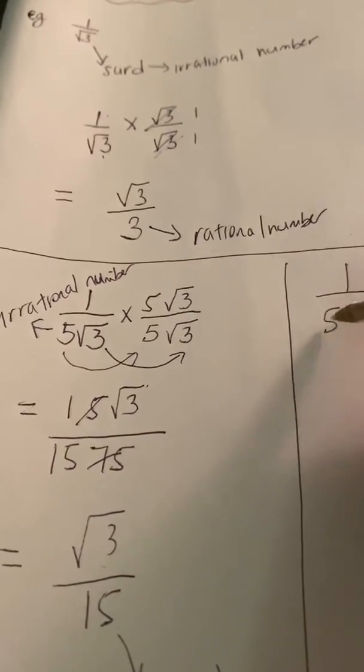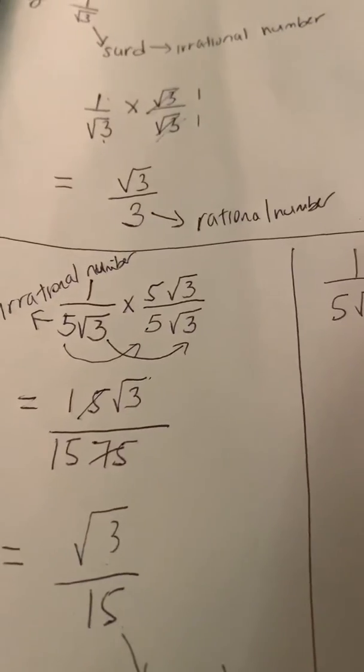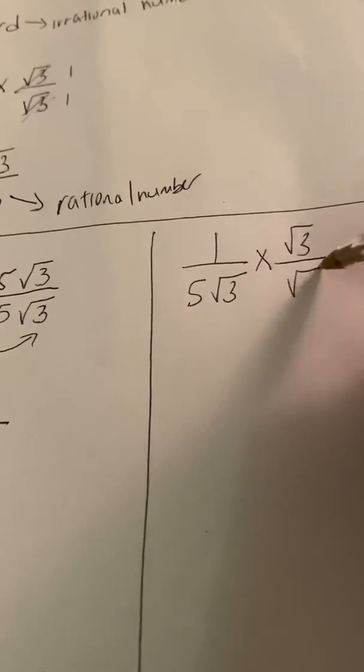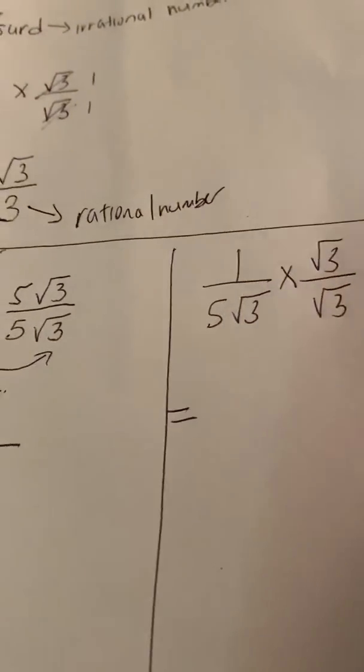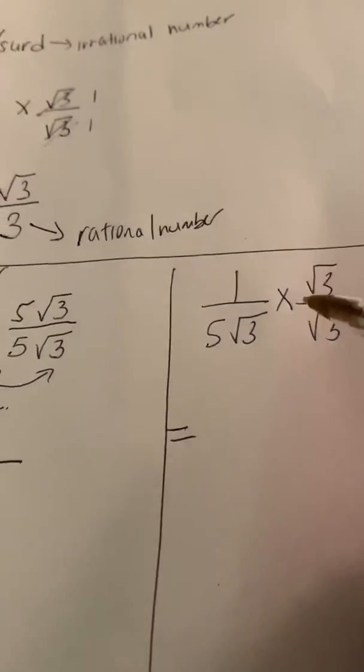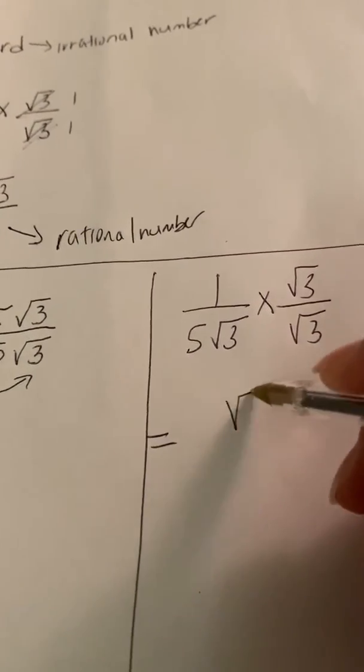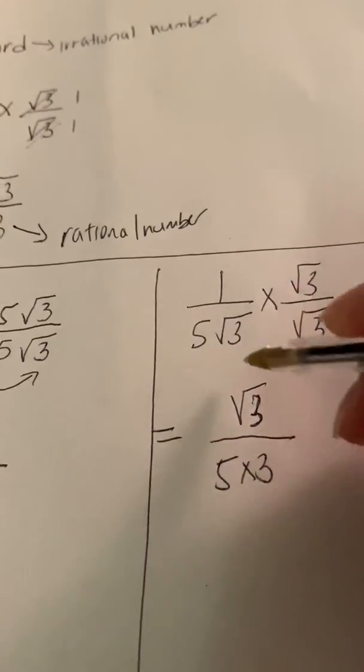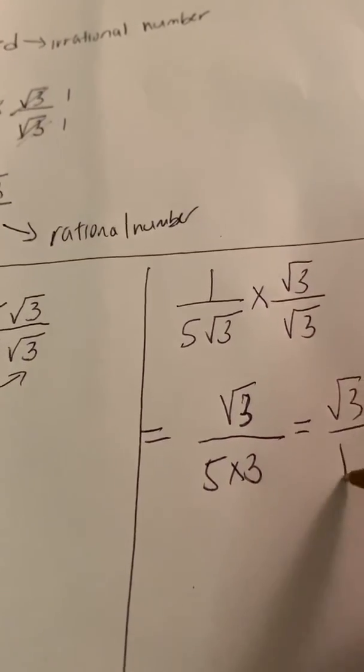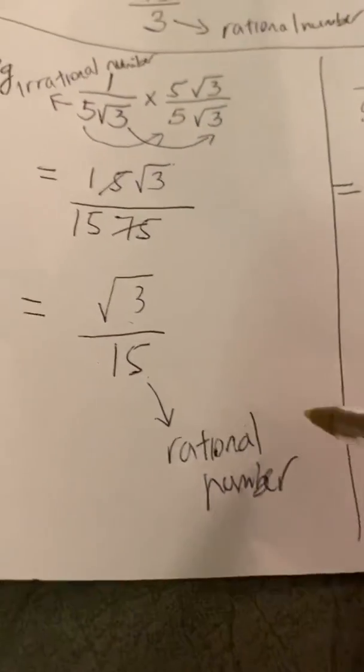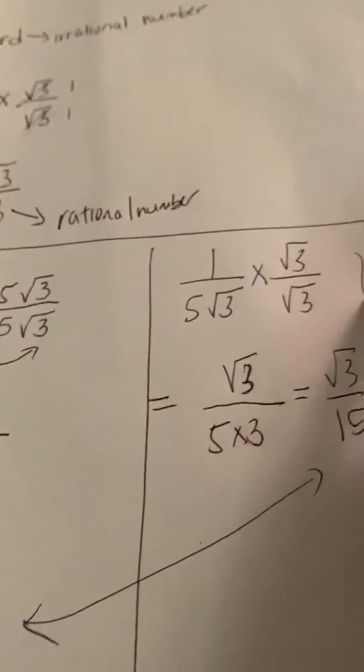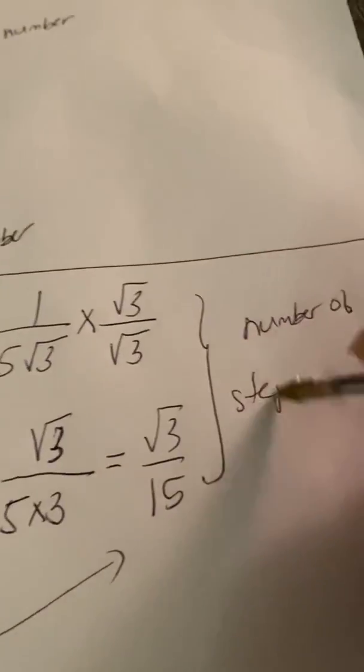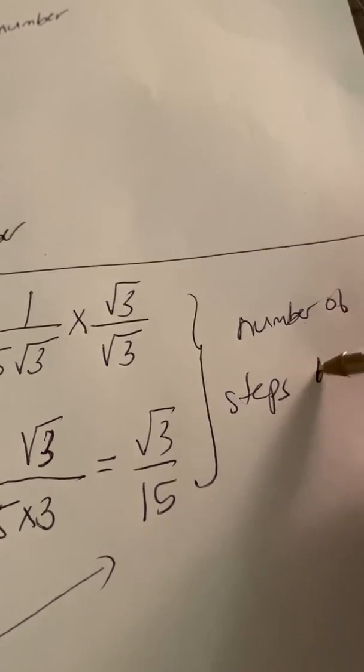We could do it in another way. Instead of multiplying by 5 root 3 on 5 root 3, we could simply multiply by root 3 on root 3. This will make the process simpler as we would have root 3 on 15, which is the same answer as what we have got previously, but the number of steps has been reduced.